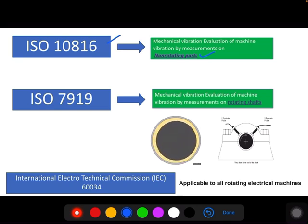Apart from 10816, there are some other standards also being used by industry. For example, ISO 7919 is a vibration standard mainly used for the evaluation of machine vibration by measurements done on rotating shafts. In case of 10816 it was non-rotating parts, but here it is on rotating shafts. It is mainly used for the journal bearings of turbo machinery or generators. Here we generally use non-contact transducers, maybe eddy current probes, and they are mounted at 90 degrees apart.